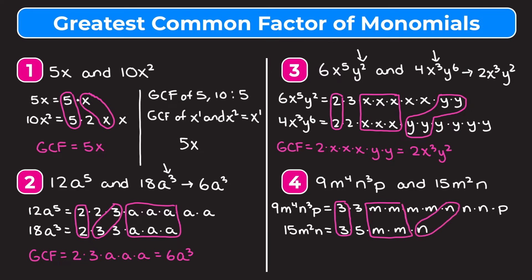The second term — 15m squared n — does not have a p, so p won't appear in our answer. The greatest common factor is 3 times the two m's times the one n, which simplifies to 3m squared times n. Using the shortcut: GCF of 9 and 15 is 3; for m's take the lowest exponent, which is 2, giving m squared; for n take the lowest exponent, which is 1, giving just n.